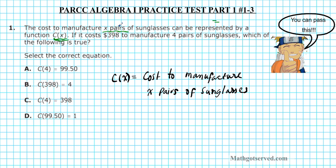Note that x represents the pairs of sunglasses that's been manufactured. Here we have 4 pairs, which tells us x is equal to 4. We want to find the cost of manufacturing 4 pairs of sunglasses. c of 4 represents the cost to manufacture 4 pairs of sunglasses, which is $398. So c of 4 equals $398, and the correct answer is option letter C.